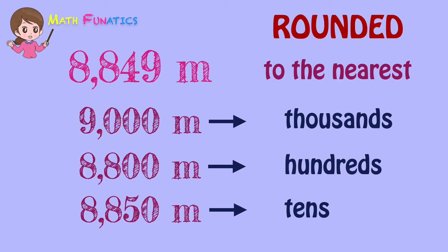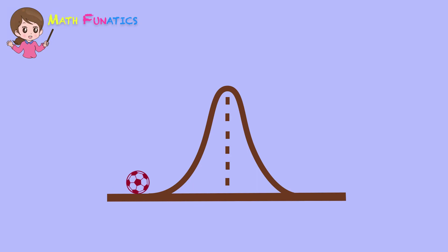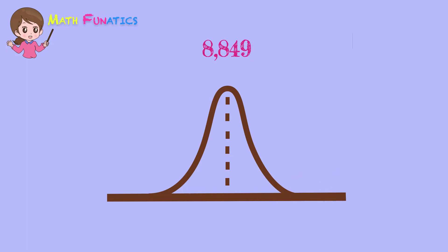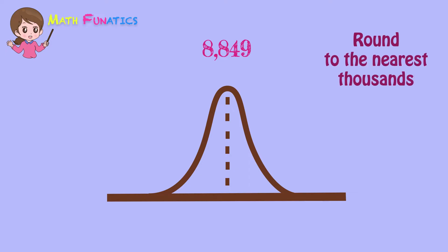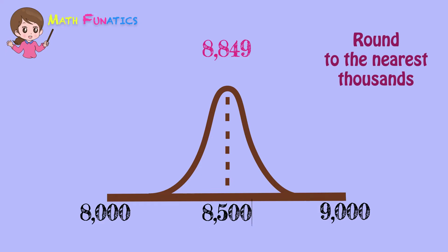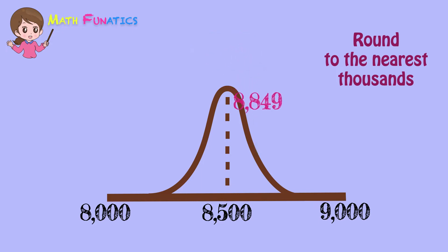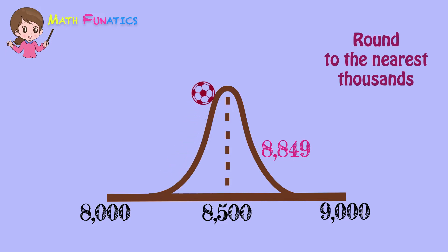To have a better understanding of rounded values, let us relate it to rolling a ball on a hill. Given that 8,849 is to be rounded to the nearest thousands, 8,000 must be placed on the left end and 9,000 on the right end of the hill. On the peak of the hill is the middle number, which is 8,500. 8,849 is found somewhere in between 8,500 and 9,000. Letting the ball roll to reach 8,849 will definitely roll further till the end and reach 9,000.